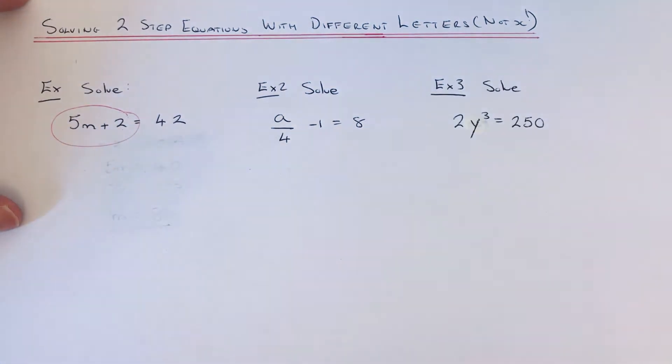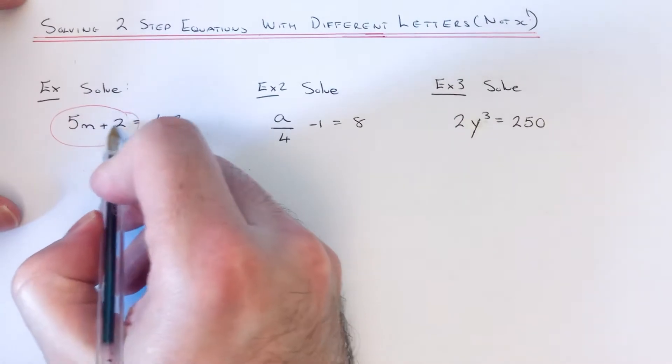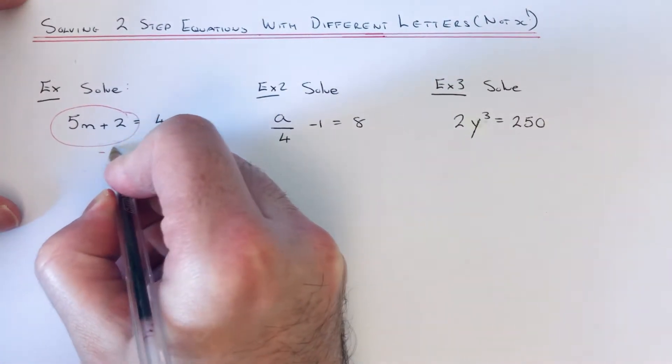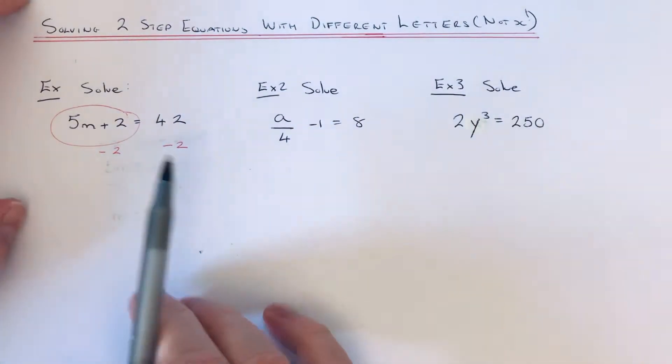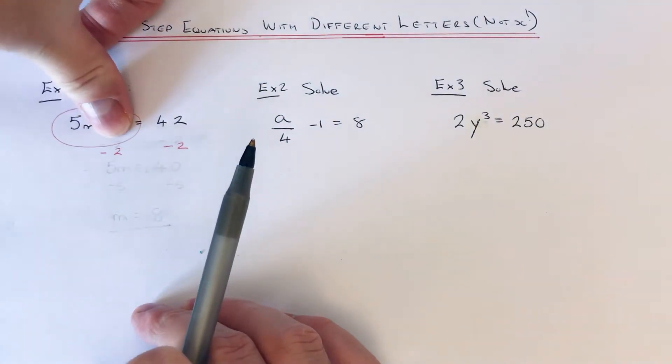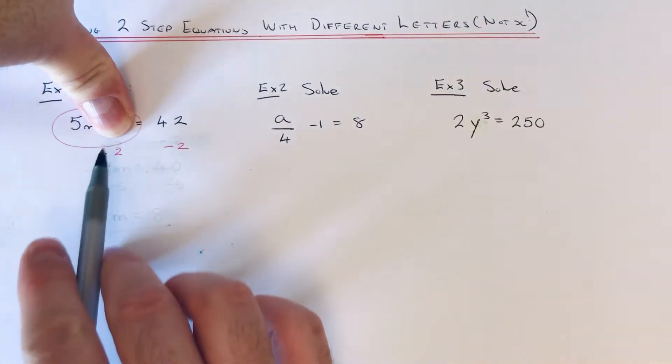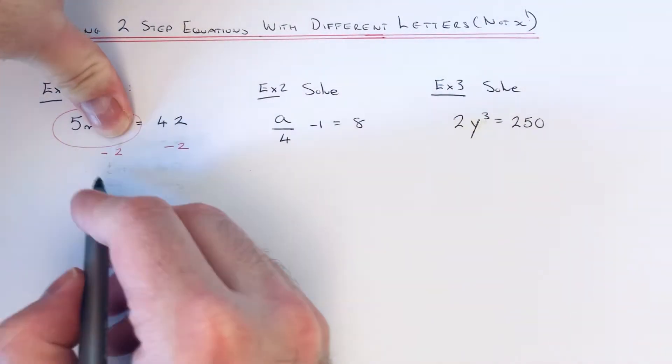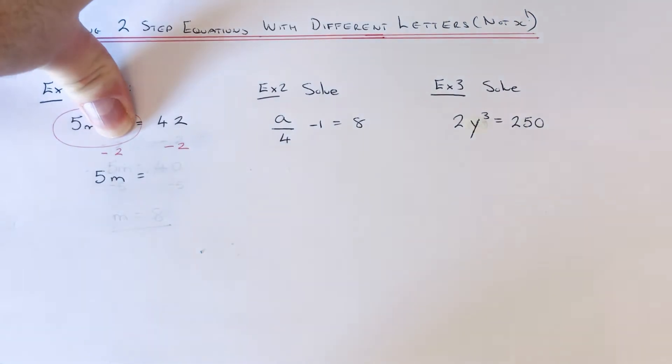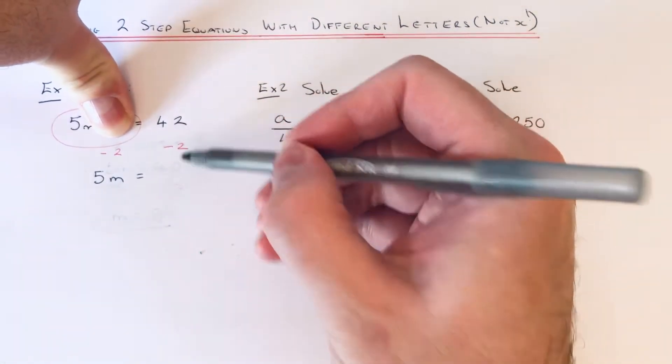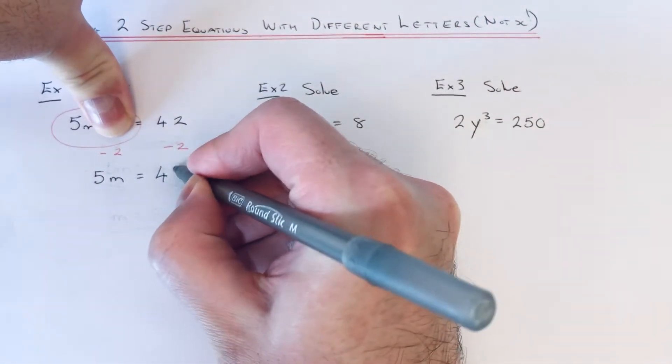So we need to just do the opposite in reverse. So the opposite to plus 2 is minus 2. So if we take 2 off both sides, this will cancel out that plus 2. And we're just left with 5m. So if we copy that down to the next line.